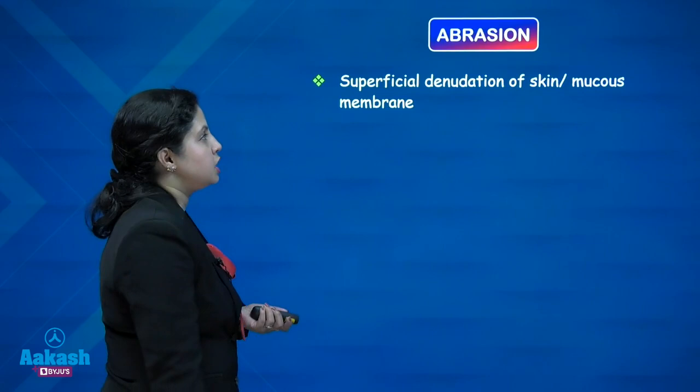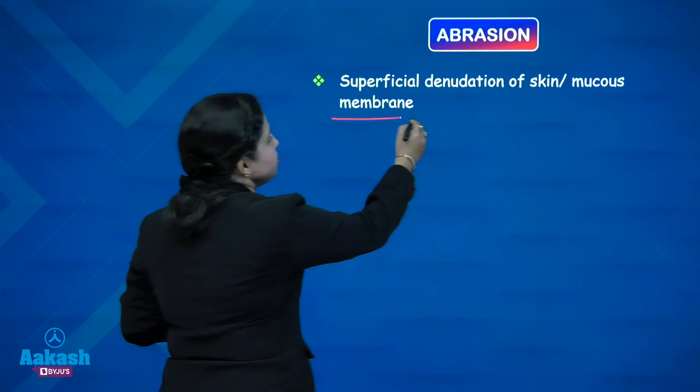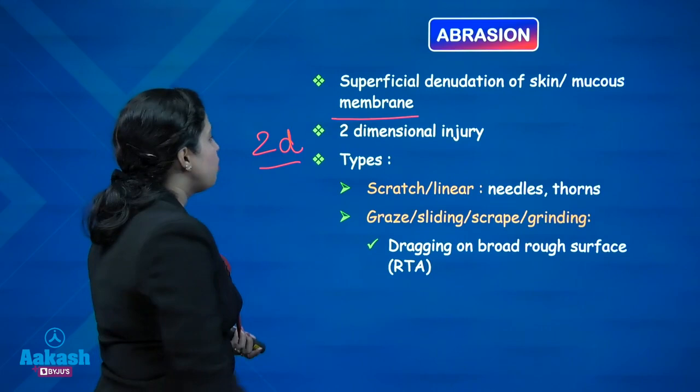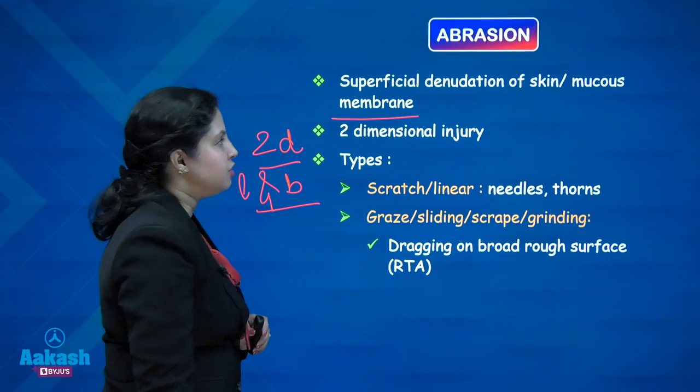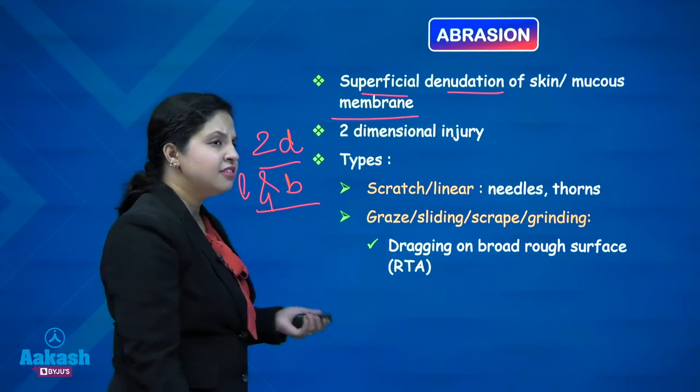Diving right ahead into the topic, let us start first with Abrasion. Abrasion is basically just a superficial denudation of the skin or the mucous membrane. It is a two-dimensional injury — it only has length and breadth; it does not have depth. Only the superficial denudation of the skin is taking place.